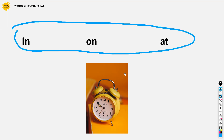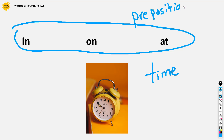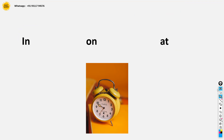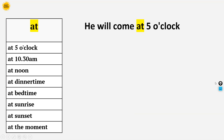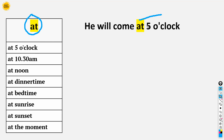In, on, at according to time — what are their positions and how can we use them? First, we are going to start with 'at'. We use 'at' with specific times: at five o'clock, at six o'clock, at ten o'clock, at twelve o'clock. For example: 'He will come at five o'clock', 'He will come at ten o'clock.'